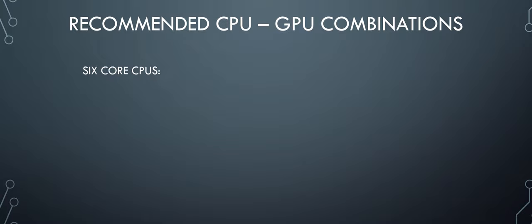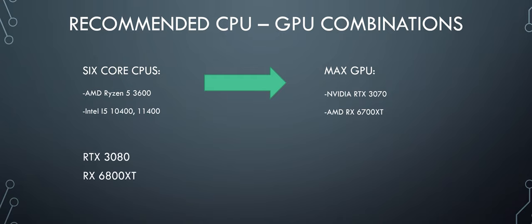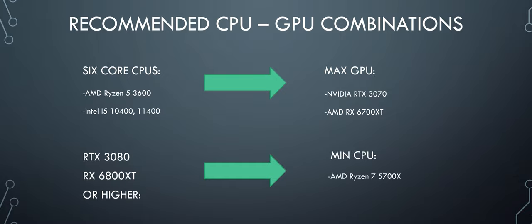I recommend that if you have a 6-core CPU from the last few generations, like a Ryzen 5 3600 or an i5-10400, that you avoid going more powerful than an RTX 3070 or RX 6700 XT. If you are planning to go with a 3080 or higher, I'd recommend at least a Ryzen 7 5700X or an Intel Core i5-12600K.